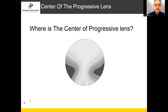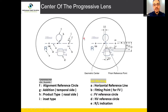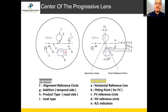You cannot define the center of a progressive lens without first identifying the engraving markings and the prism reference point. When you have the progressive lens, if you want to determine the center, you should first mark the engraving markers of the lens before taking it to the lens meter. We have two types of marks on a progressive lens: engraving marks, which are permanent and will never be erased during the lens's lifetime.